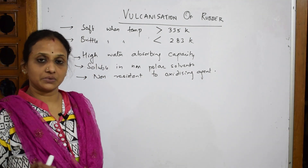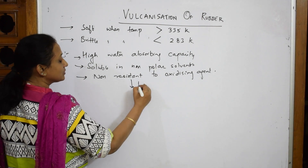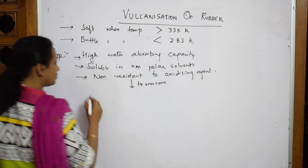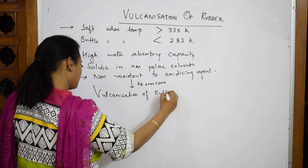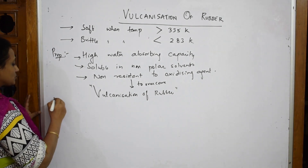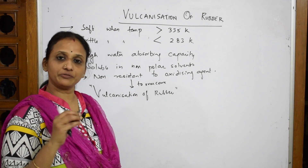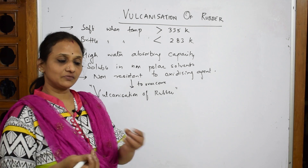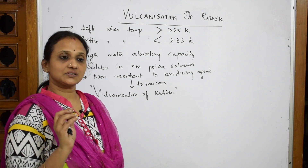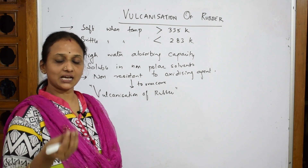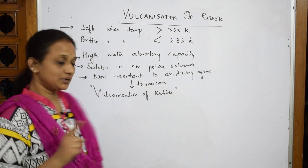To overcome all these problems, we vulcanize rubber — we add sulfur bridges into the rubber. Vulcanization is a process of increasing the strength of rubber by modifying its structure. We add certain accelerators and use about 4% sulfur as a standard for tires, adding sulfur bridges wherever there are double bonds.